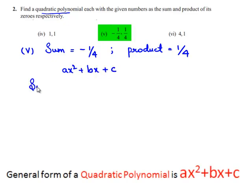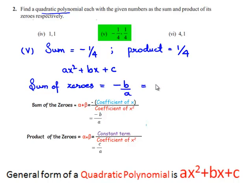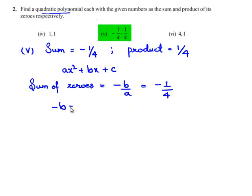We know that sum of the zeros is equal to minus B by A and the given sum of zeros is minus 1 by 4. So by comparison we can write minus B is equal to minus 1 that becomes B is equal to 1 and also A is equal to 4.